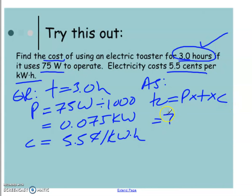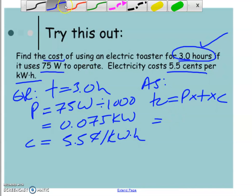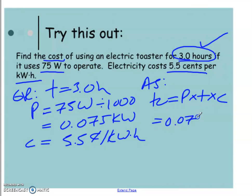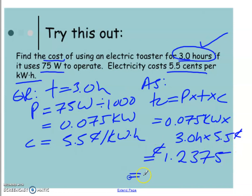So it's going to be 0.075 kilowatts times 3 times 5.5 cents per kilowatt hour. So we're going to have 0.075 times 3 times 5.5, which gives us 1.2375 cents, which divided by a hundred gives us 0.01 cents. So it's going to cost us a cent.